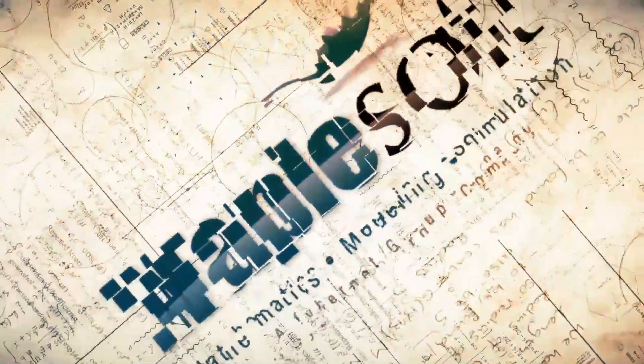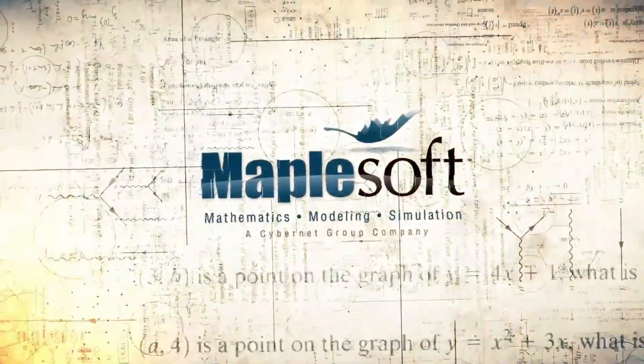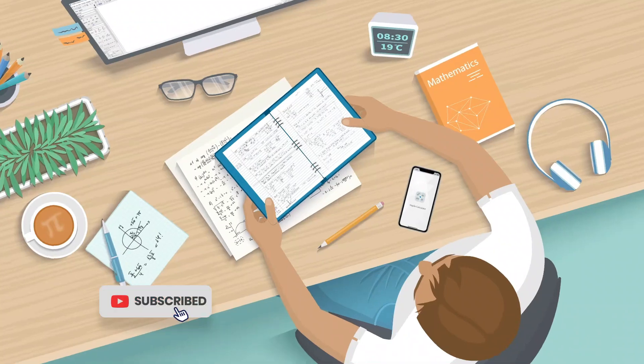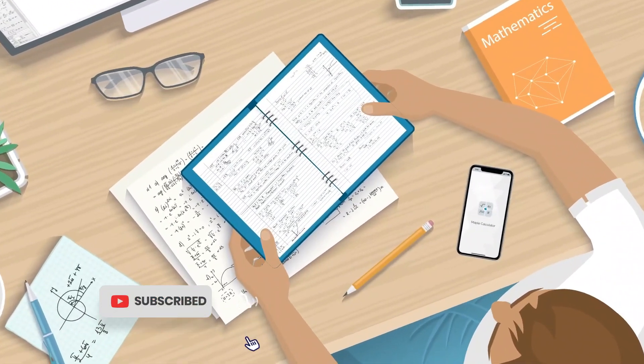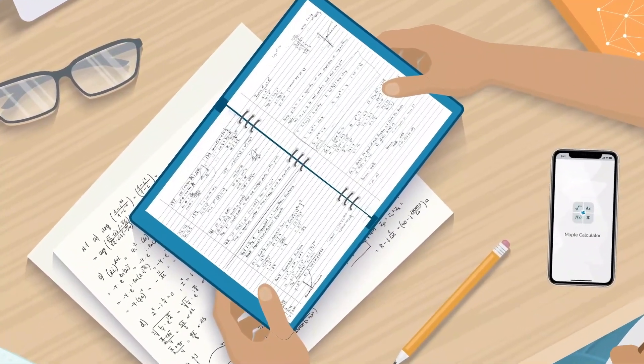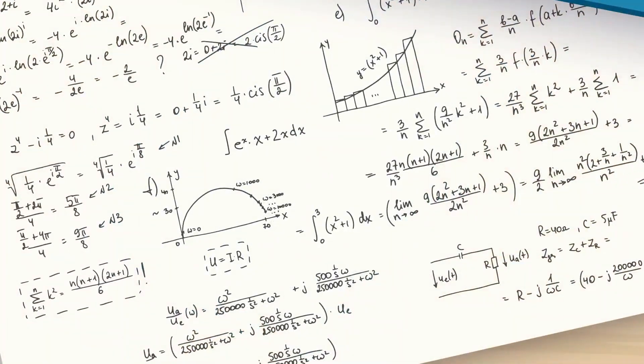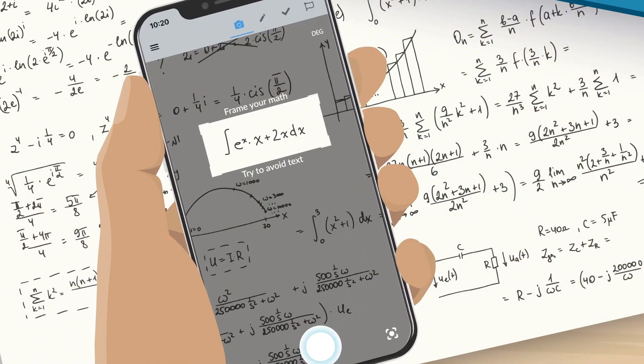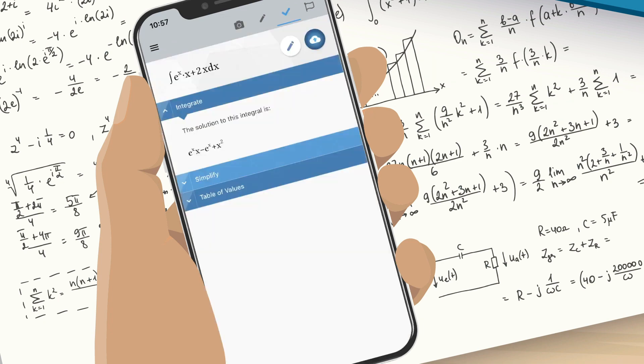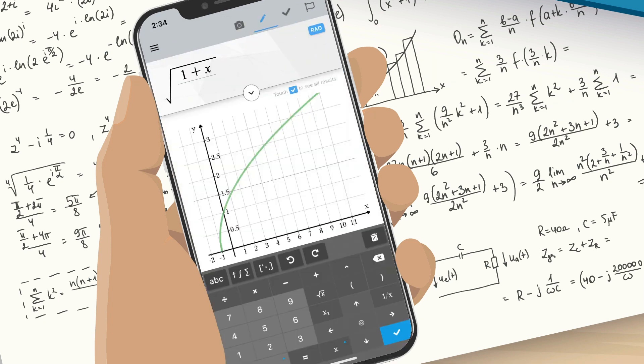Whether you're doing simple calculations or working on university-level math problems, Maple Calculator can do it all. Solving a math problem and want to check your answer? Simply take a picture of your question and select the mathematical operation you want to perform. Or you can enter the problem using the built-in math editor and watch the graph change instantly as you change your problem.